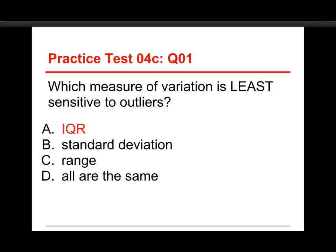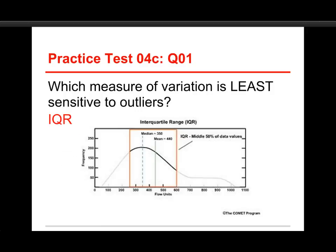The standard deviation is very susceptible to outliers, and the range is the most susceptible. But let's take a look at how the IQR works. Here's a little chart that shows a rather skewed distribution, and the IQR, the interquartile range, is that part that's in that box, the orange box in the middle.